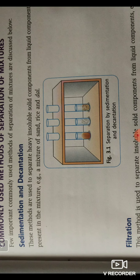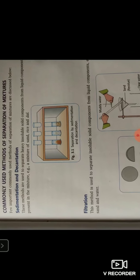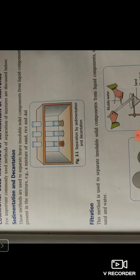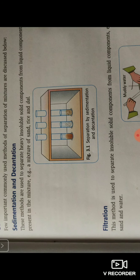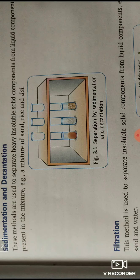You have done the process of sedimentation — allowing the heavier, denser particles to settle down. Then you tilt the container and remove the water; that process is called decantation. So sedimentation and decantation are used to separate heavy insoluble solid components from a liquid component. The physical property involved is density — heavy particles are more dense, so they settle down, while the liquid component with less density floats.